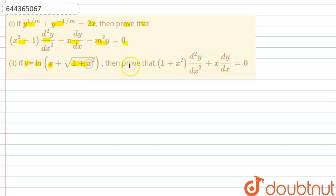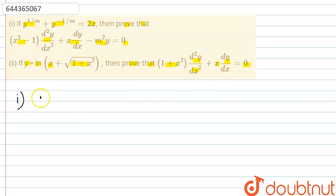y equals x plus root of 1 plus x squared — then prove that (1 plus x squared) into d²y/dx² plus x into dy/dx equals 0. We have two parts to prove. We will start from the first part: y^(1/m) plus y^(-1/m) equals 2x.